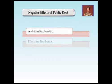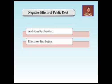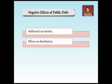Now the negative effects of public debt. First is the additional tax burden. Whenever the government borrows money from the public, it is its moral responsibility to return the loan. The government cannot pay off loans alone; it collects the amount only from the people by imposing taxes, which increases the tax burden on both the rich and poor classes of society.